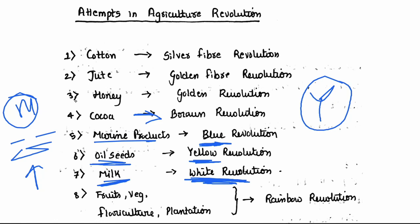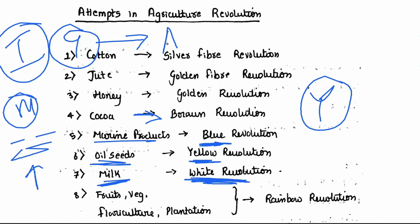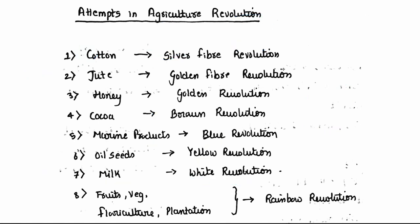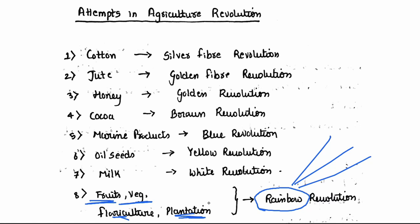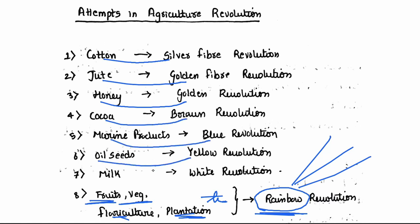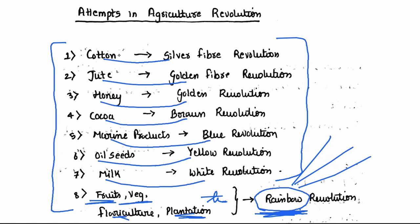India is the largest producer of milk in the world. In India, Gujarat is the largest milk-producing state. In Gujarat, the city of Anand is home to Amul — with plants in Anand and Vadodara. There is also Rainbow Revolution, covering fruits, vegetables, floriculture, and plantation. Any of these revolutions may be asked in the exam, including in match-the-following questions.